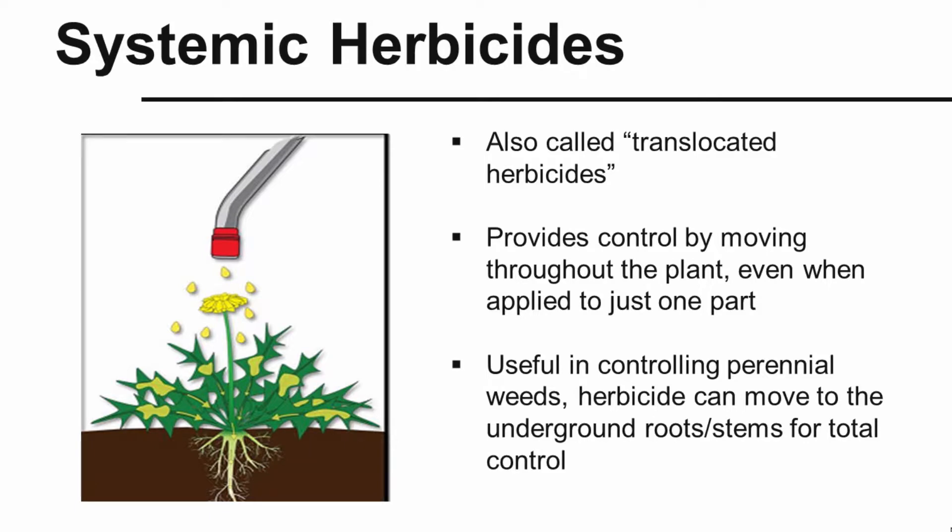Next, we look at whether a herbicide is systemic or contact. Systemic herbicides are also referred to as translocated herbicides — they provide control by moving throughout the plant even when applied to just one part. This is very useful for controlling perennial weeds because the herbicide can move to underground roots and stems for total control. For example, when spraying a dandelion with a systemic herbicide, it's absorbed by the foliage and translocated down to the roots, killing the stubborn taproot.